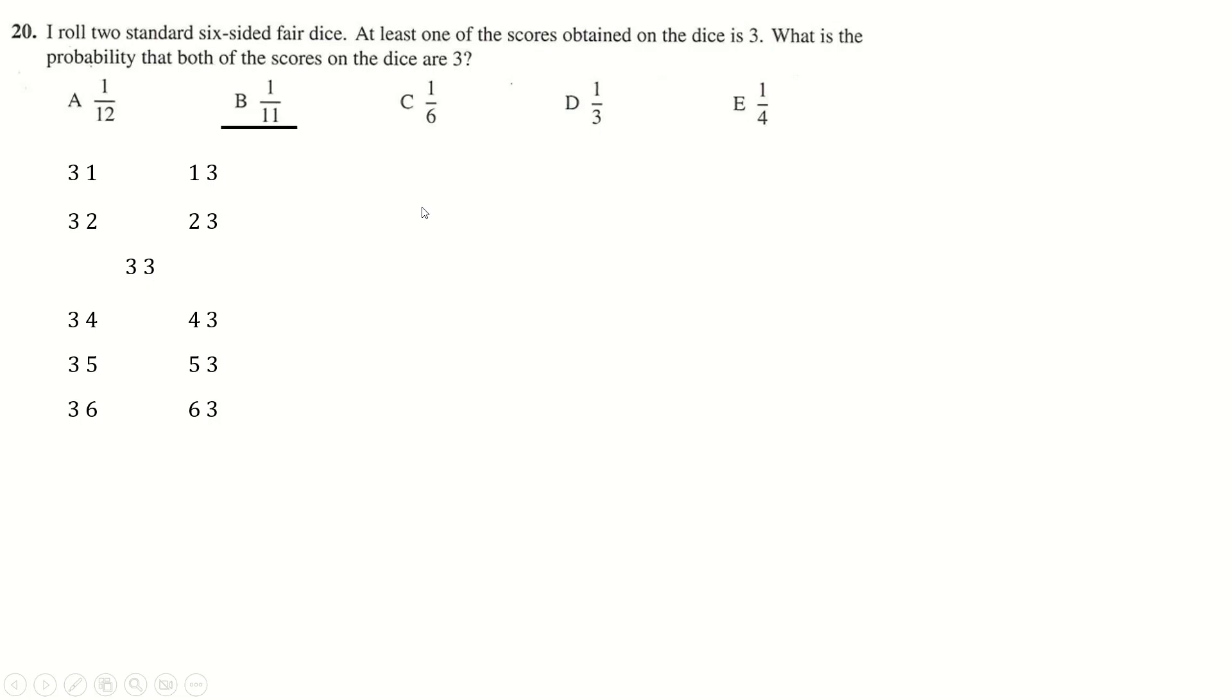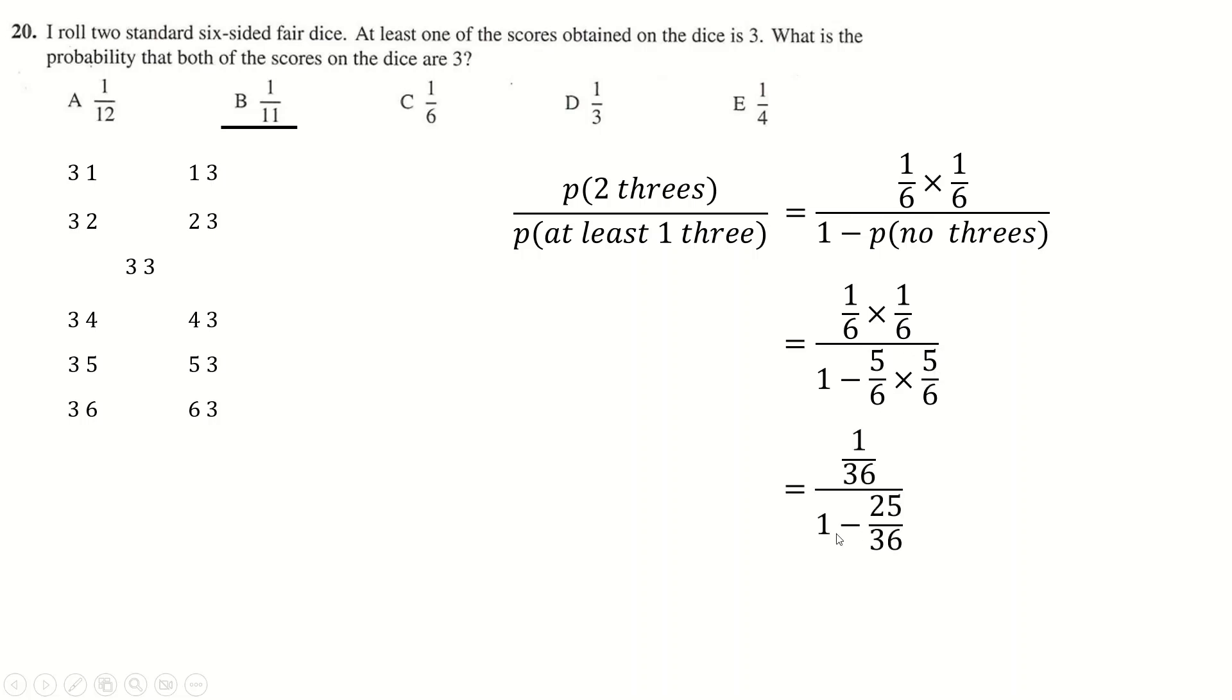If you want to do that in a more formal way, you could say that the probability is the chance of having two threes on top divided by the probability of having at least one three on the bottom. The chance of having two threes is 1/6 times 1/6. The probability of at least one three is the same as one minus no threes. No threes is 5/6 times 5/6. One minus that is 11/36. And then these cancel, you get 1/11.